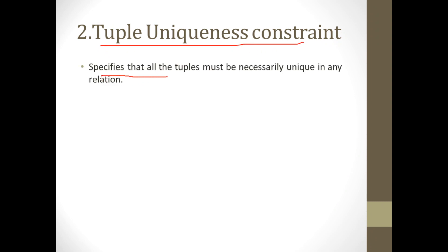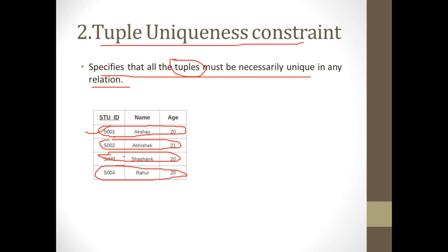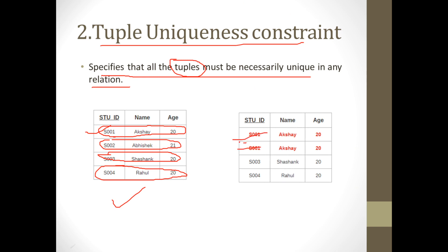Tuple uniqueness constraint specifies that all the tuples must be necessarily unique in a relation. For example, in this table we have four tuples — each tuple is a complete row. These four tuples are unique and different, so the constraint is satisfied. However, if two tuples are the same — for example, S001 Akshaya 20 appears twice — then the tuple uniqueness constraint is violated.